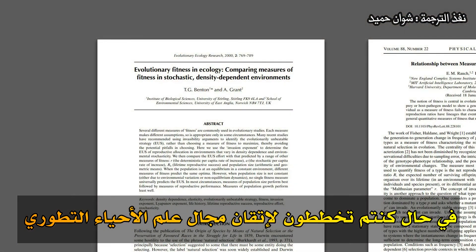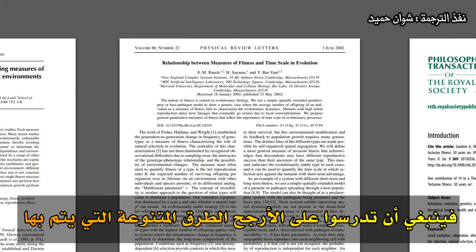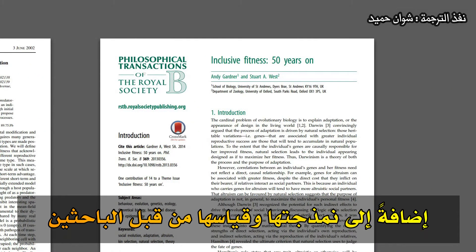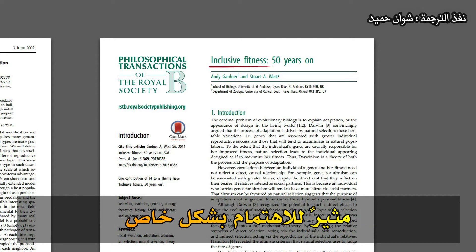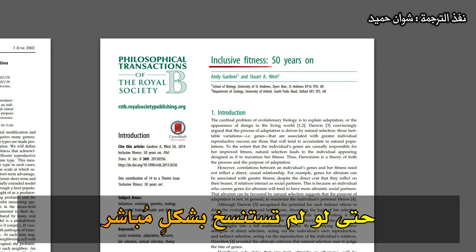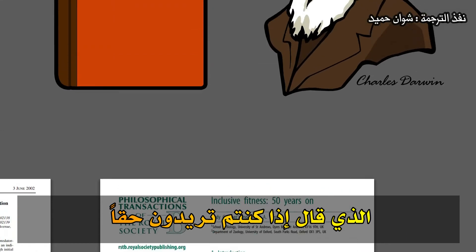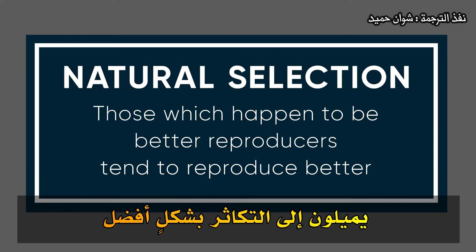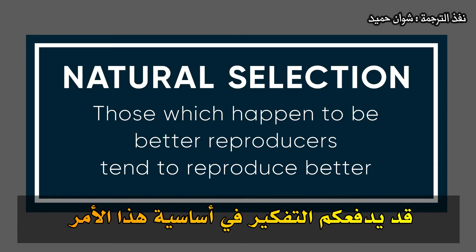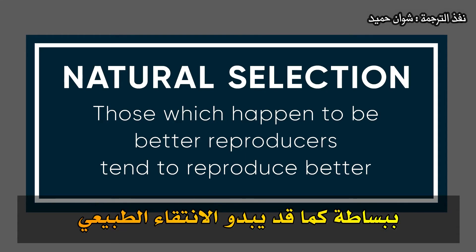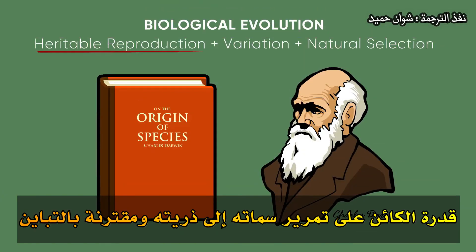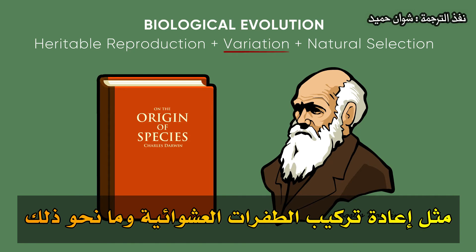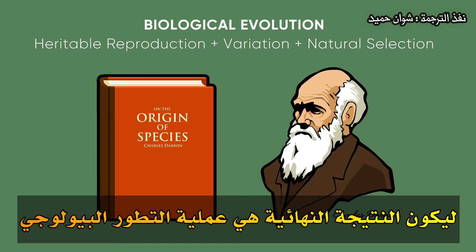Now, if you plan to master the field of evolutionary biology, you should probably study the diverse ways in which fitness is talked about, modeled, and measured by researchers. The concept of inclusive fitness is especially interesting — it turns out there actually are ways to spread copies of your genes even if you don't directly reproduce. That said, if you really just want a clear, foundational understanding of evolution, there is a different bumper sticker description of natural selection that I find more helpful: those which happen to be better reproducers tend to reproduce better. Simple as natural selection might seem, when combined with heritable reproduction — the ability of an organism to pass its traits on to its offspring — and combined with variation generated by things like random mutation, recombination, and so on, the end result is the process of biological evolution.